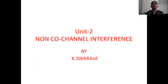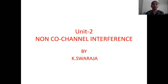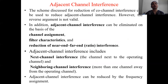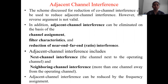Coming to the next part: non-co-channel interference. What are the different factors resulting in non-co-channel interference and what is non-co-channel interference — everything you will see in this video. The other part in Unit 2 is cell coverage for signal. So totally, Unit 2 consists of three parts: co-channel interference, non-co-channel interference, and cell coverage for signal. In this lecture, we will cover what non-co-channel interference is and the different factors affecting it.